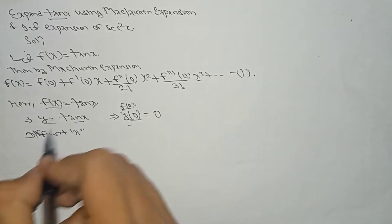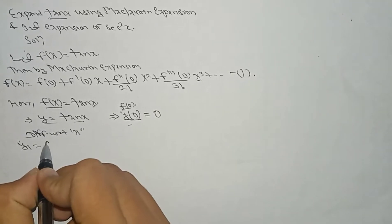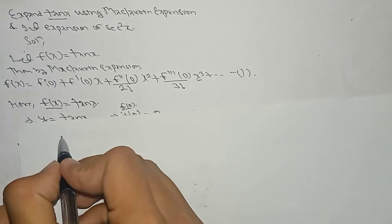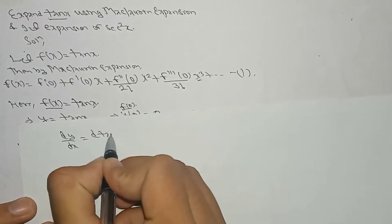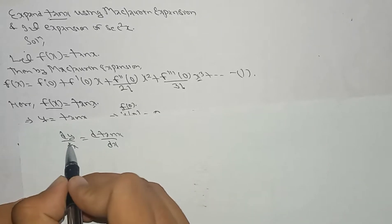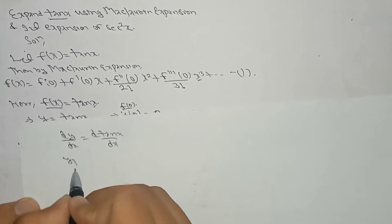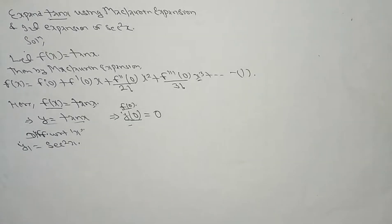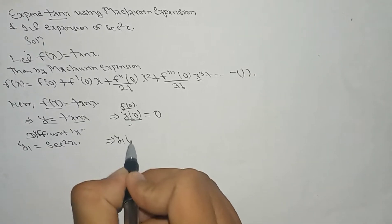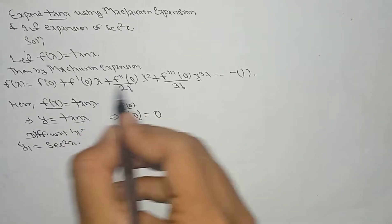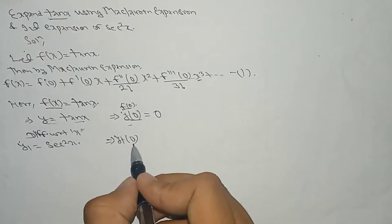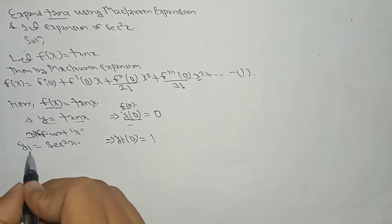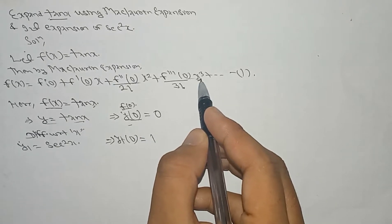Differentiating with respect to x: dy/dx = d(tan x)/dx, which gives sec²x. So y1 = sec²x. Since it is differentiated one time, we write y1. Now y1(0): sec(0) = 1, so y1(0) = 1. We need to differentiate up to 3 times since the formula goes up to the x³ term.